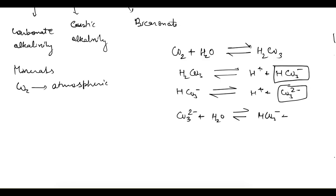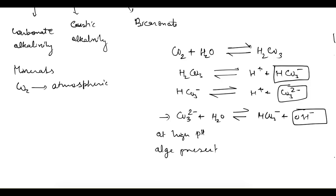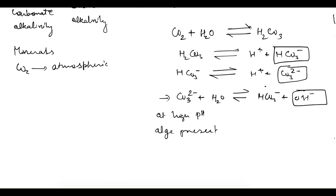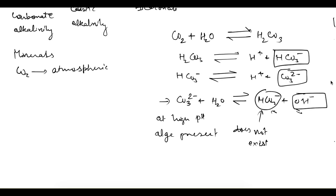The last reaction is that the carbonate ion reacts with water to give HCO₃⁻ plus OH⁻ — that is your caustic alkalinity. This last reaction happens at high pH or if algae is present; otherwise it is a very weak reaction. If algae is present, it consumes all the bicarbonate ion, so at high pH, bicarbonate ion does not exist — only the hydroxyl ion exists. Therefore, we make the assumption that bicarbonate ion and hydroxyl ion cannot exist together in water, and we use this assumption for further calculations.